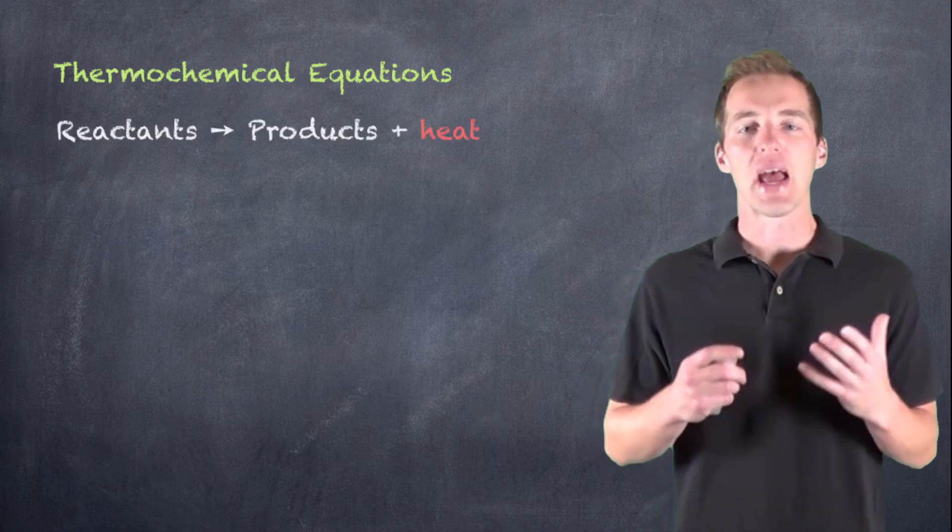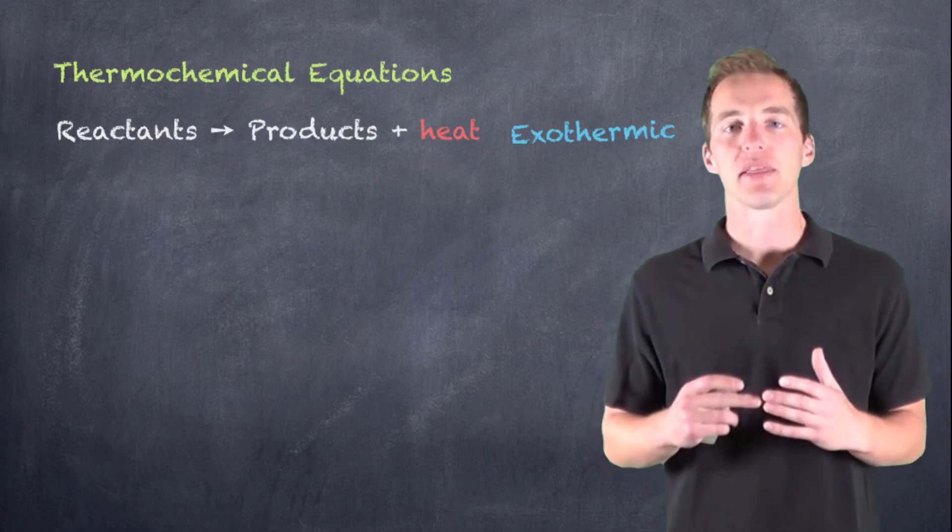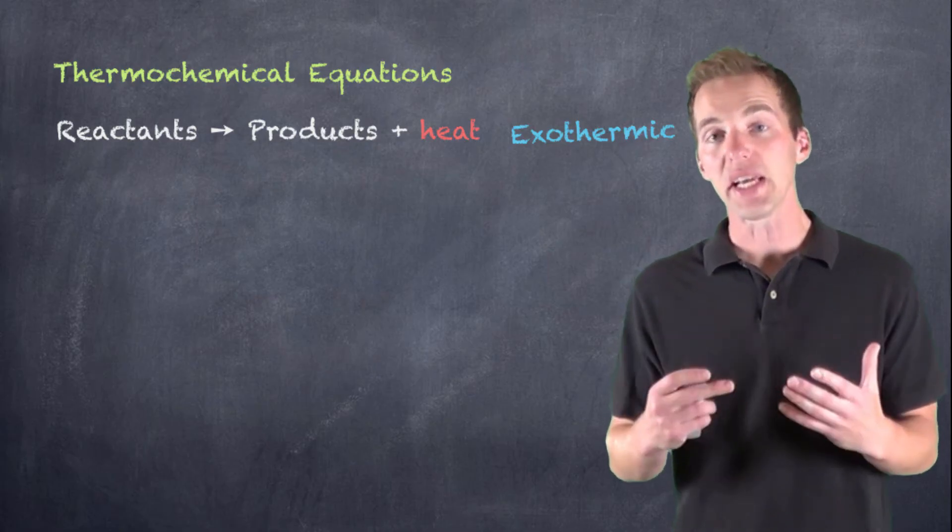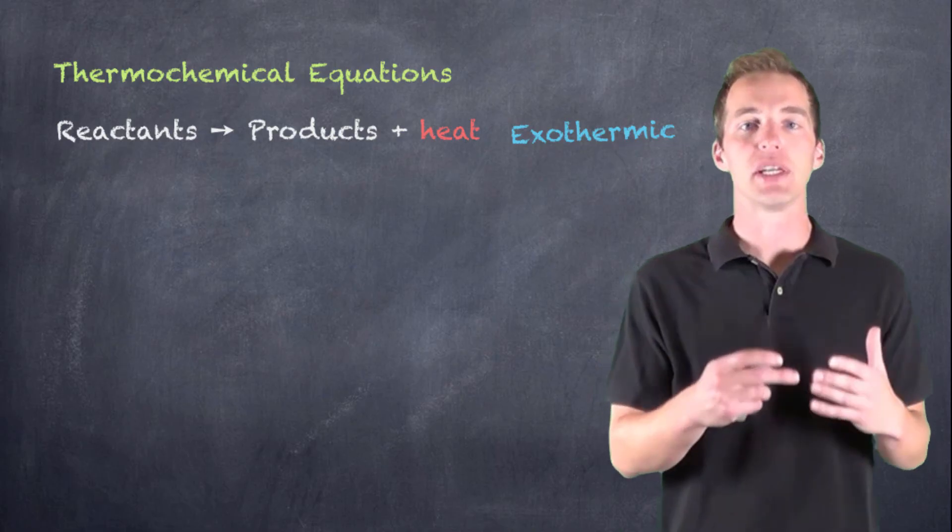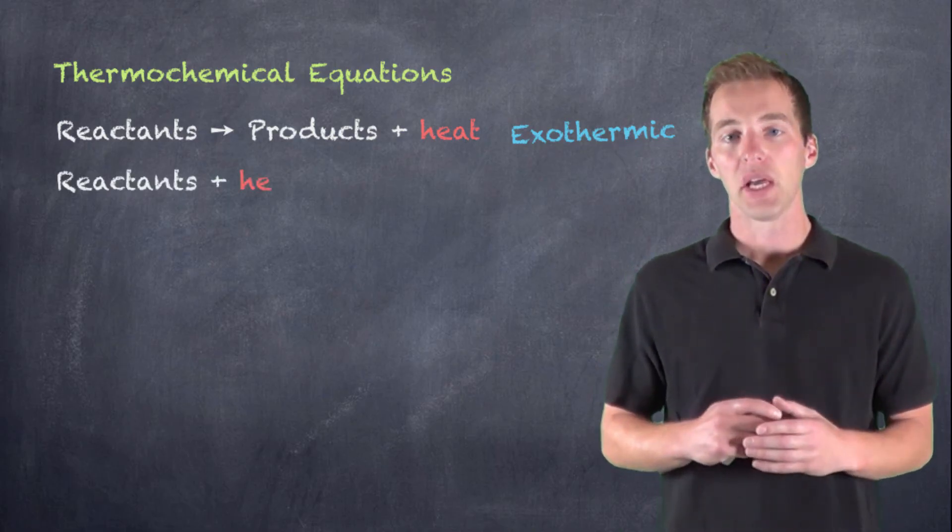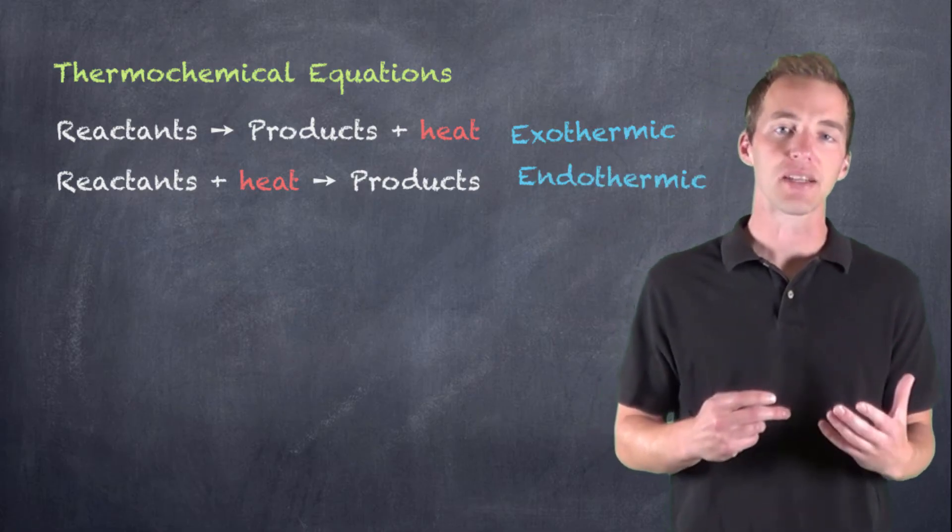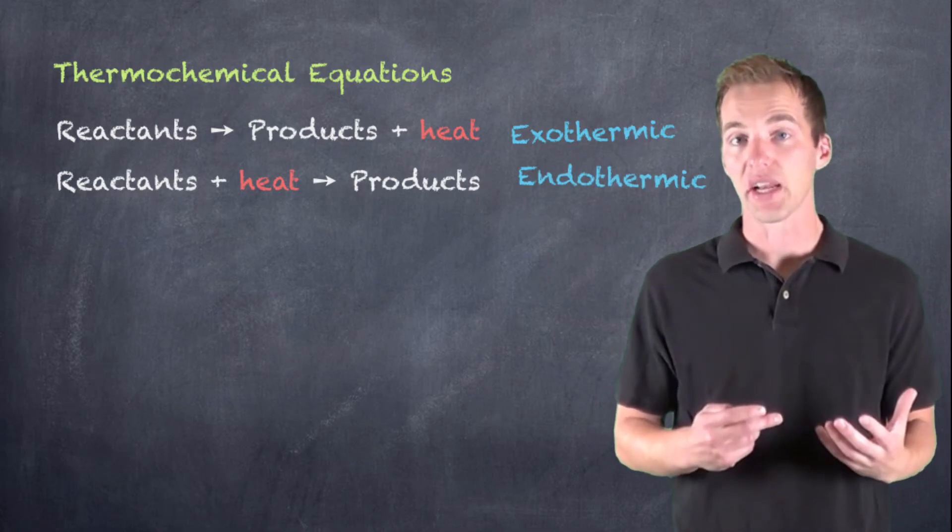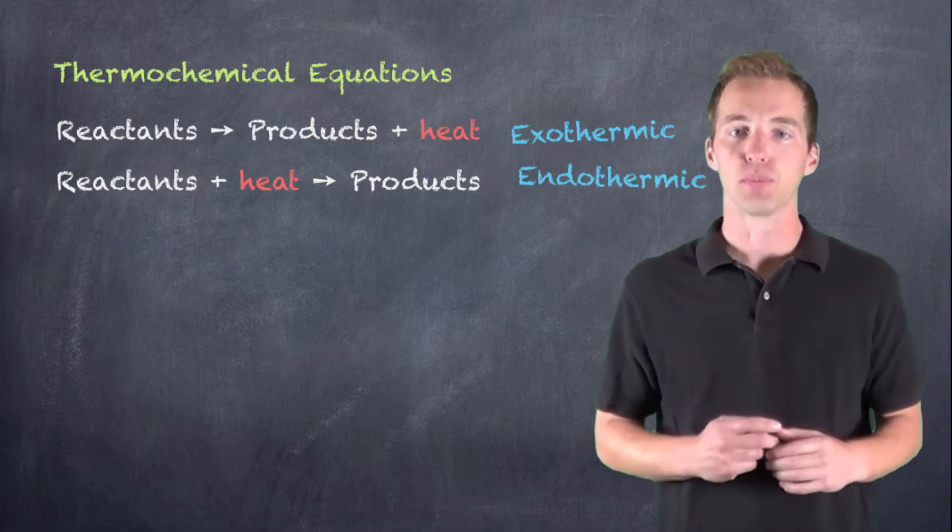And if we take a look at exothermic reactions in which energy is given off, we represent this energy as what we call heat. And in an exothermic reaction, because energy is given off, heat is treated as a product. It's produced as a result of this chemical reaction. In an endothermic reaction, we treat heat as one of the reactants. So we write it on the left side of the arrow. That is, energy is required for this reaction to proceed.